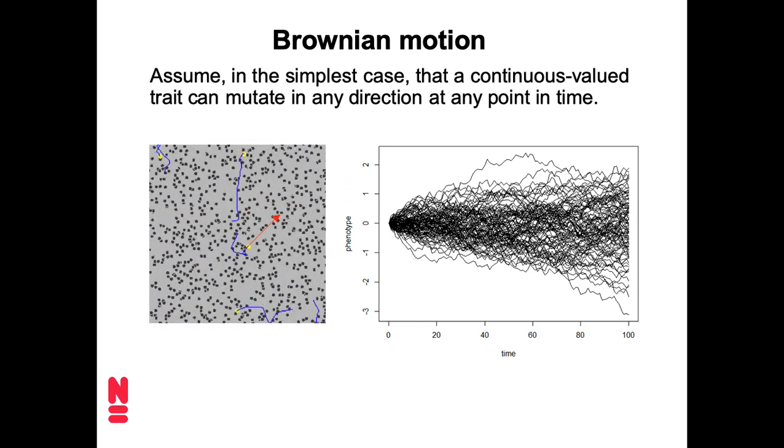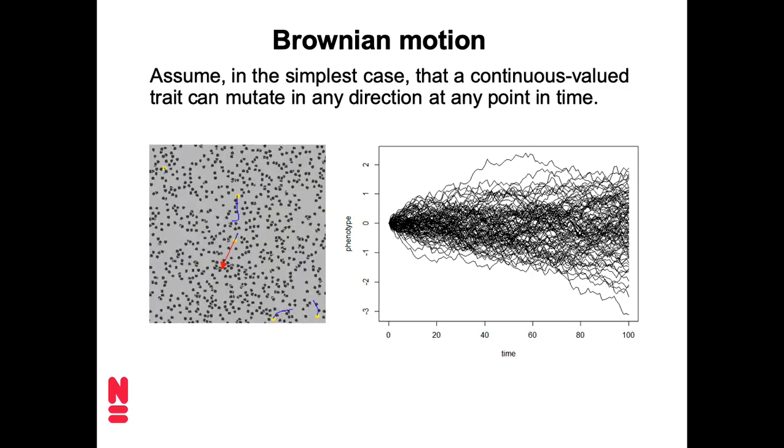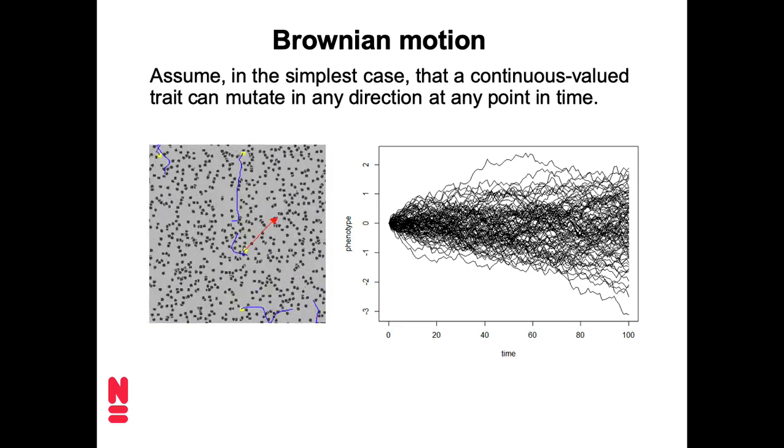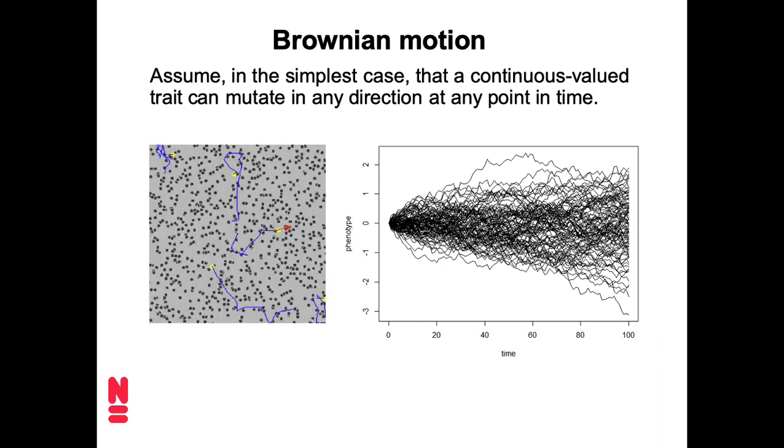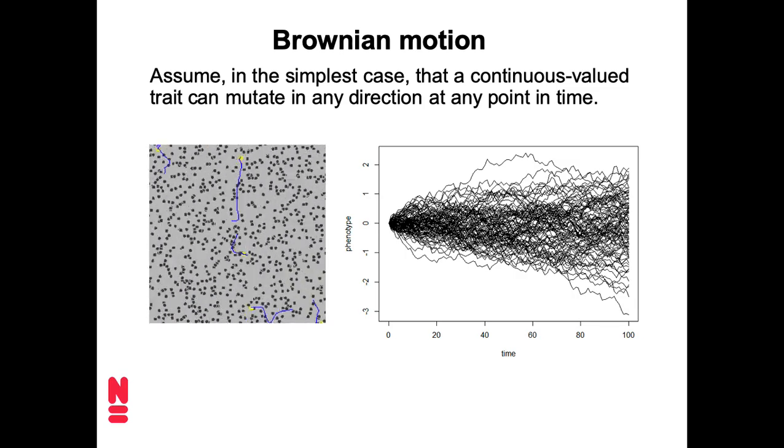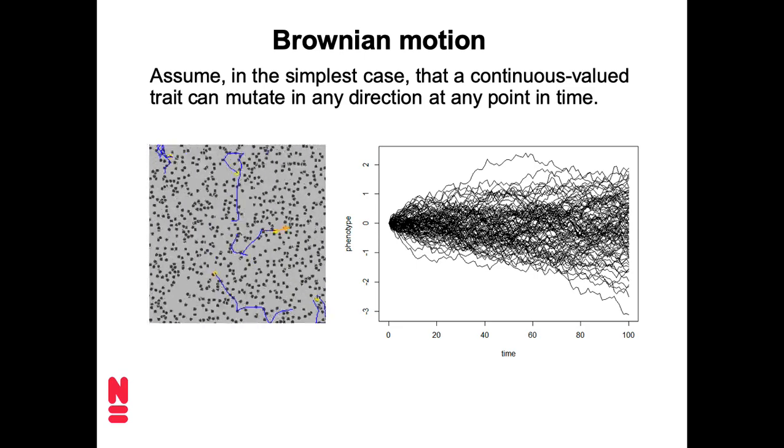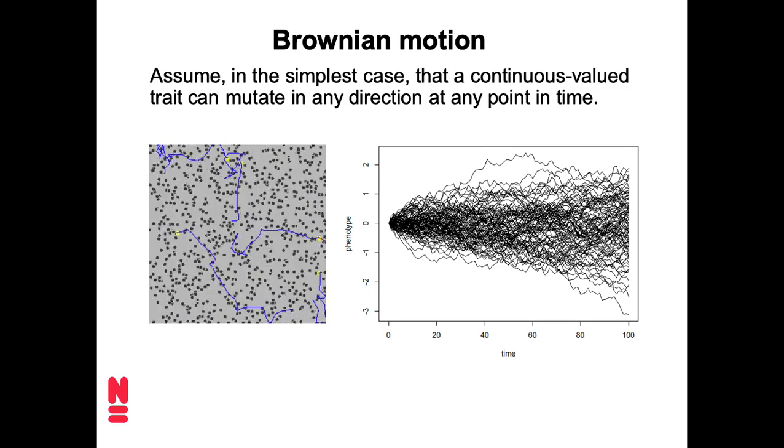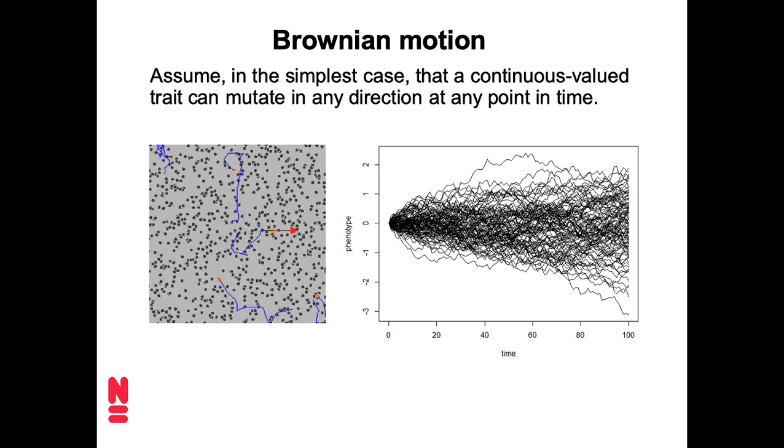What does it look like when we let something evolve by Brownian motion through time? That's what you can see on the right. Here, a bunch of simulations have been run, and you can see that for each of these lines over time, we can go in any direction. Sometimes it goes up, sometimes it goes down in terms of the phenotype value on the Y-axis as we travel from left to right. But also, over time, the variance across all these simulations just monotonously increases. This is kind of like a funnel that gets wider and wider over time.